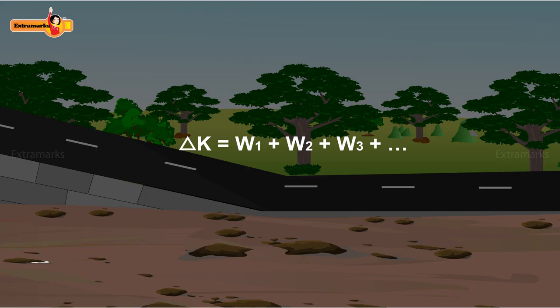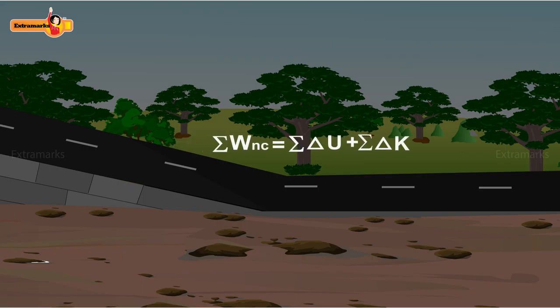The change in kinetic energy of the block is equal to the algebraic sum of the work done by all four forces acting on it. The work done by the conservative forces can be obtained from their associated potential energies. In the given relation, W_nc represents the work done on the block by non-conservative forces.